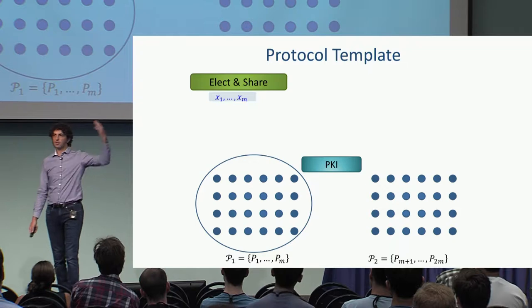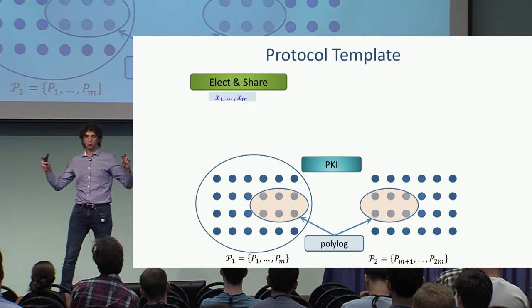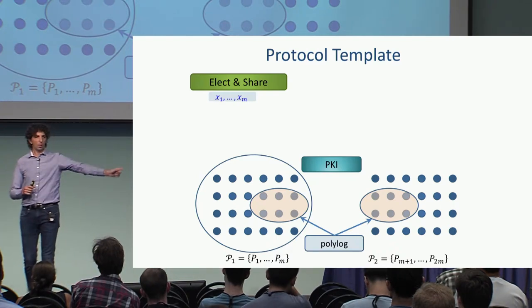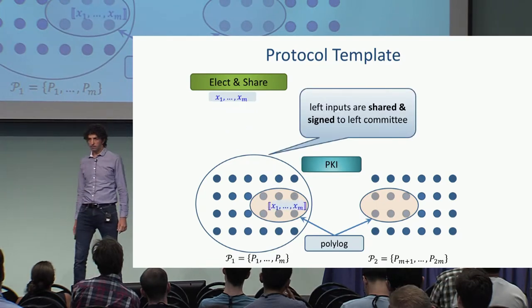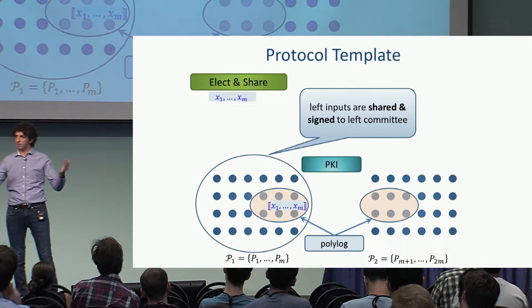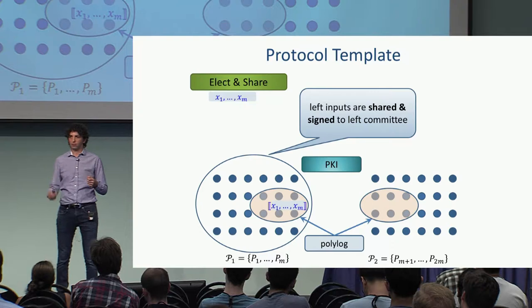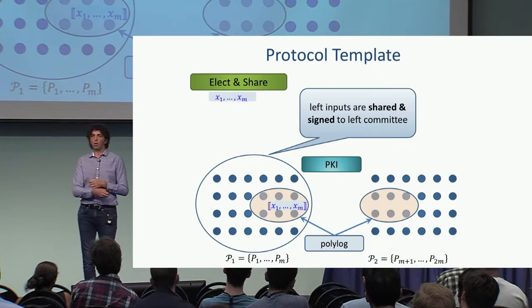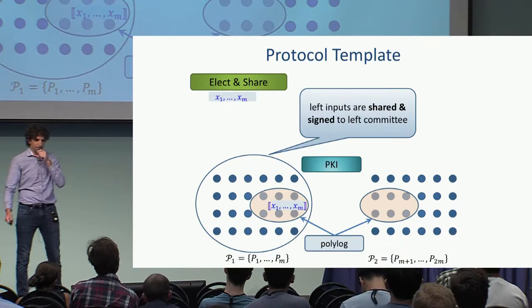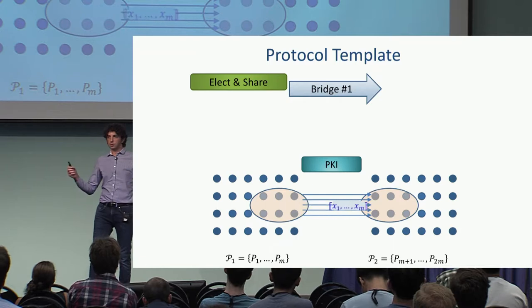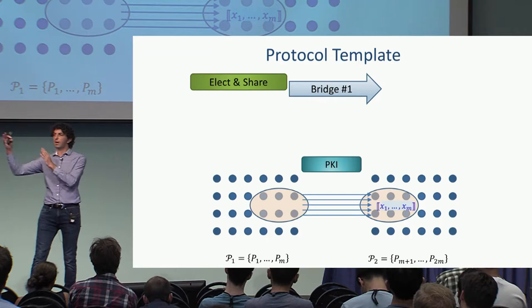The left side of the parties invokes some kind of ideal functionality or trusted party. The parties give their inputs to this trusted party, which elects two polylogarithmic committees — one on the left, one on the right. It tells the left committee what these two committees are, signs their identities using signatures, and secret shares all of the left-side inputs, giving the committee shares of those inputs. Next, we have a bridge: the left committee transfers the secret shares to the right committee.